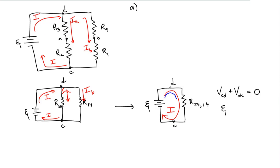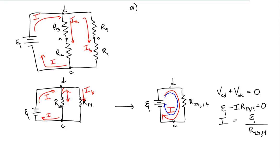Analyzing the clockwise path from C to D and back, the potential across the equivalent resistor is negative the product of the current times the equivalent resistance, and the sum equals zero. This means we can find the battery current if we find the equivalent resistance of the circuit.